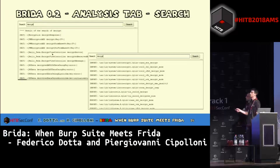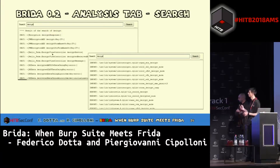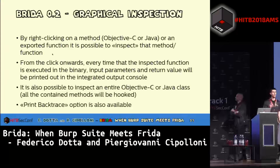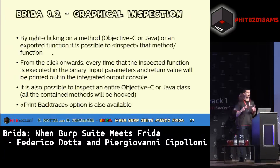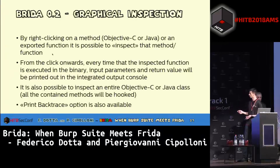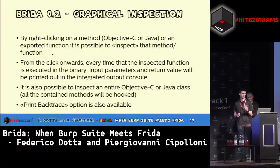Here is an example: on the left you can see the Objective-C subtree of an iOS application, and on the right the libraries subtree. We can search for anything — the term is searched across class names, method names, and library import/export names. Another new feature is called graphical inspection: we can right-click on each method of the subtree and click Inspect to dynamically add a hook that inspects that method. Every time that method is called, the console will show the input parameters and the return value without having to write a single line of code.